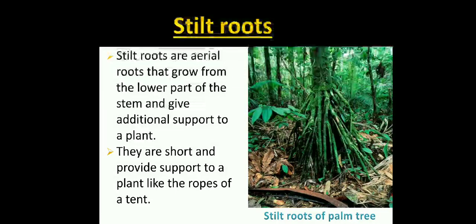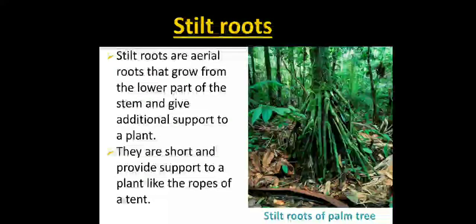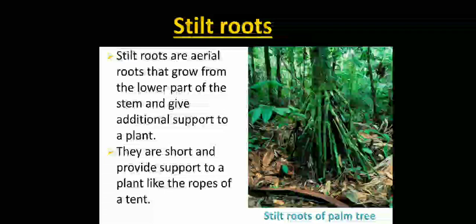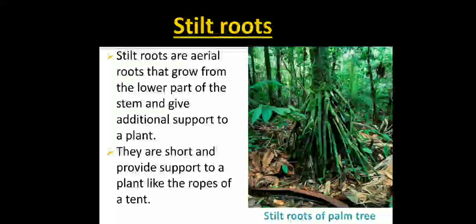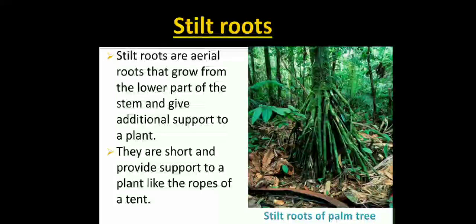Stilt roots. Stilt roots are aerial roots that grow from the lower part of the stem and give additional support to a plant. They are short and provide support to a plant like the ropes of a tent. Example: stilt root of a palm tree.